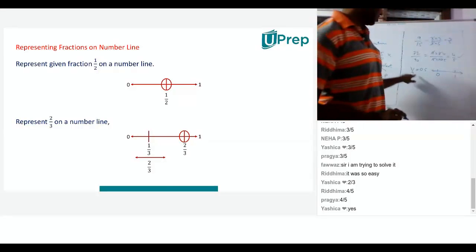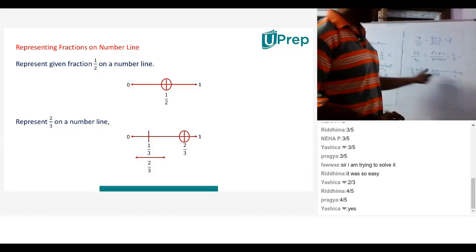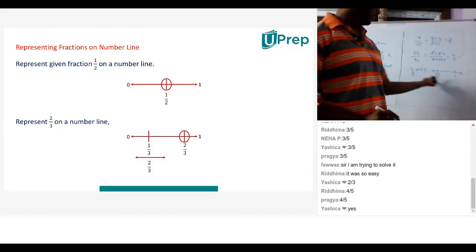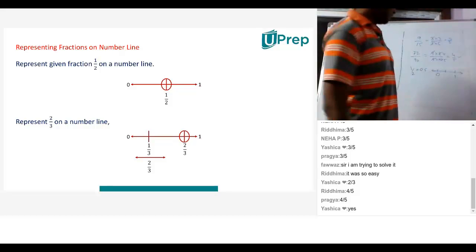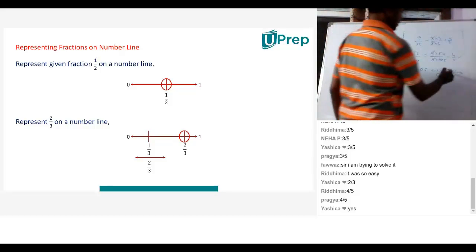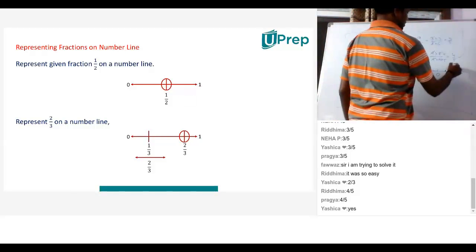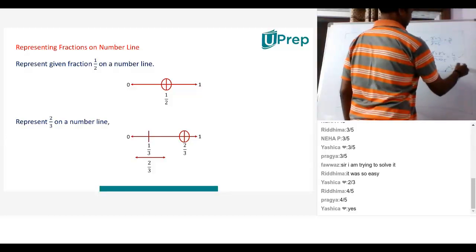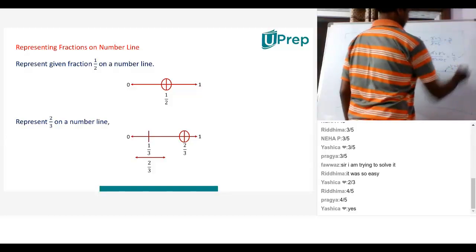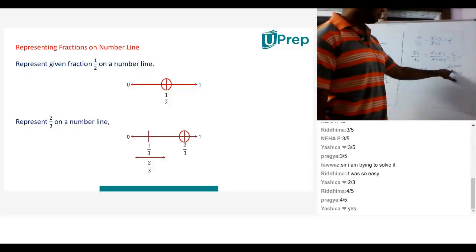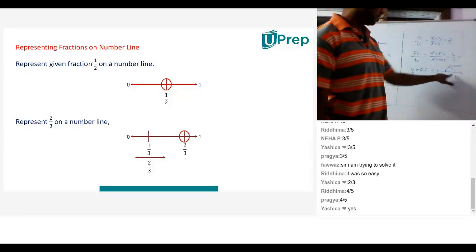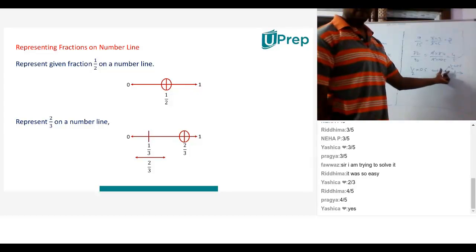Because the denominator is 2, I will divide the gap between 0 and 1 into 2 equal parts. So this part is nothing but 0.5. I have 2 in the denominator, so I divide the gap between 0 and 1 into 2 equal parts — these are 2 equal parts.